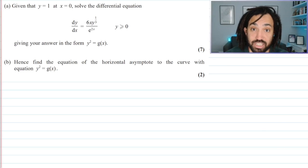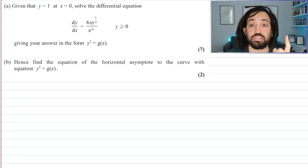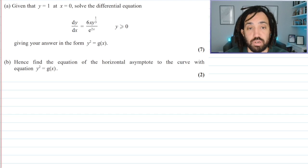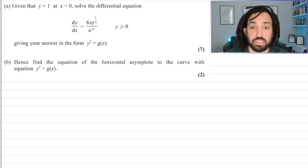Hello, my name is Mr. Asprey, and I'm back for the daily tricky A-level question. Today we've got a differential equation. Given that y equals 1 at x equals 0, solve the differential equation.